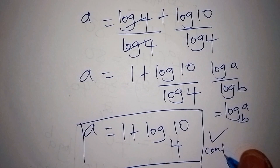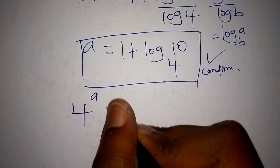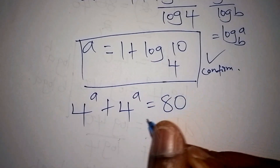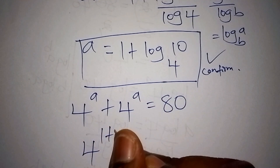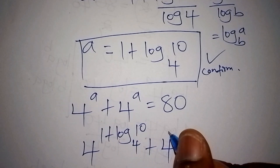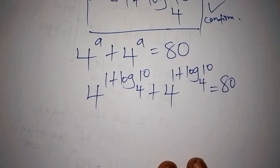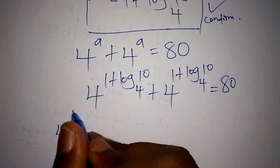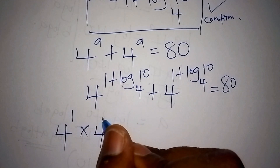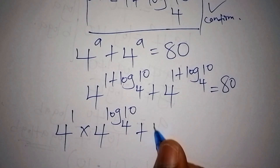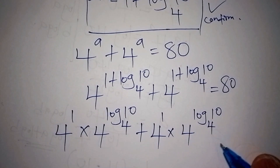Let us now quickly confirm this is indeed the correct answer. Recalling our problem: 4 to the power of a plus 4 to the power of a is equals to 80. We substitute a with 1 plus log base 4 of 10. So we have 4 to the power of (1 plus log base 4 of 10), plus again 4 to the power of (1 plus log base 4 of 10), all equals to 80. Using exponent rules, the plus becomes multiplication: 4^1 times 4^(log base 4 of 10), plus 4^1 times 4^(log base 4 of 10), equals 80.